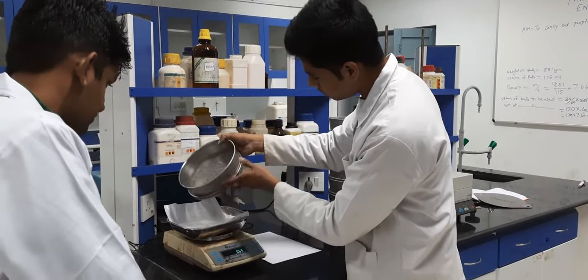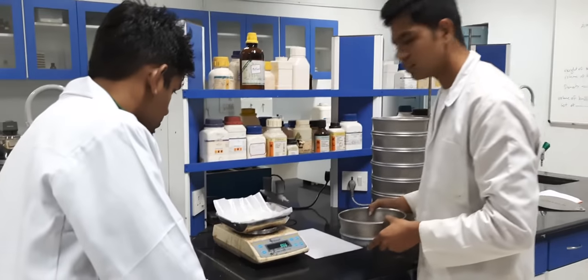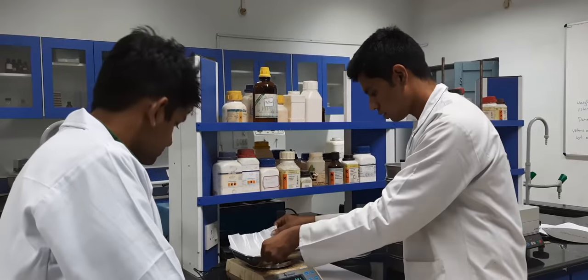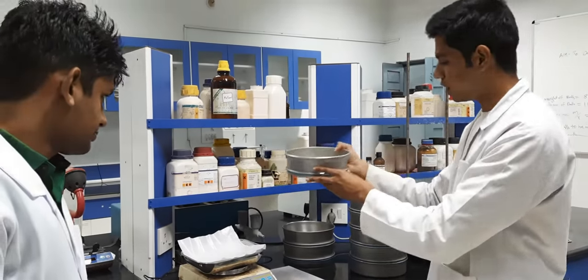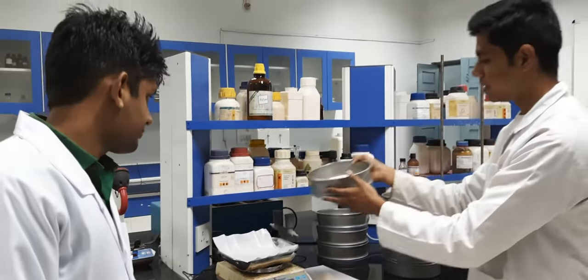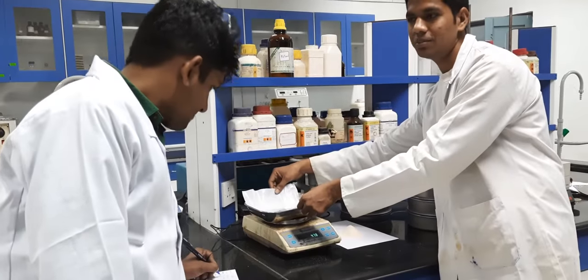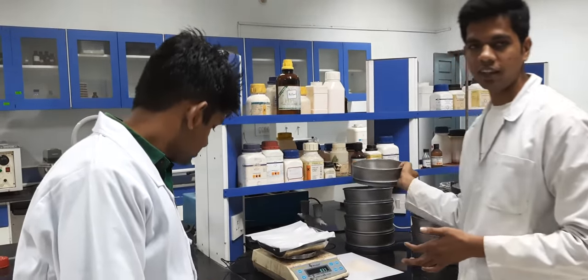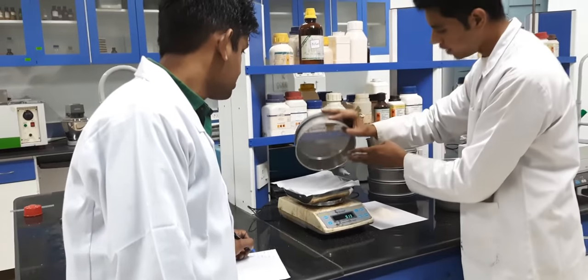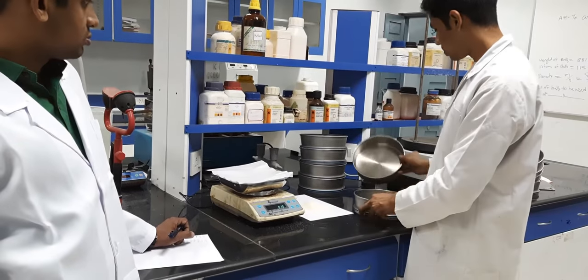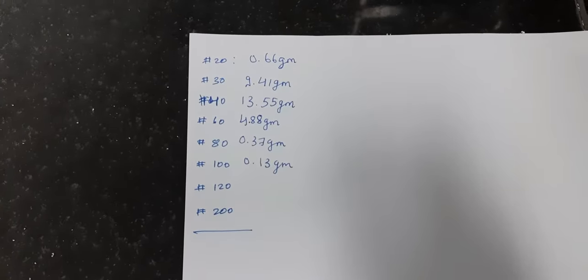Sieve number 20: weight 0.66 grams. Sieve number 40: weight 0.55 grams. Sieve number 60: weight 4.9 grams. Sieve number 80: weight 0.37 grams. Sieve number 100: weight 0.37 grams - there is nothing. And the pan is empty. You can see the quantities and write them down.